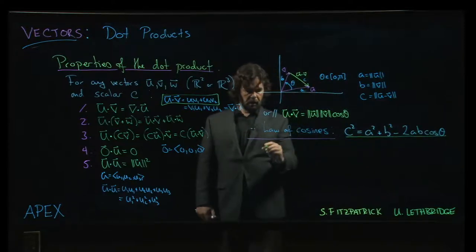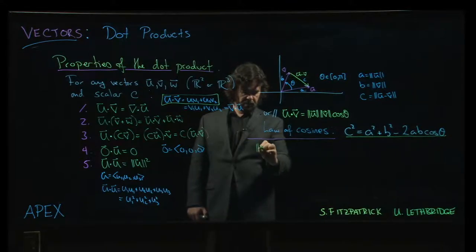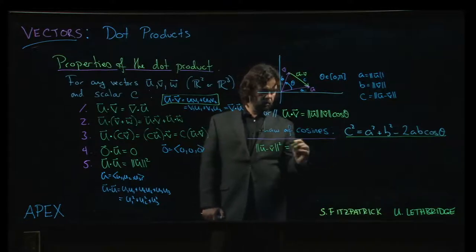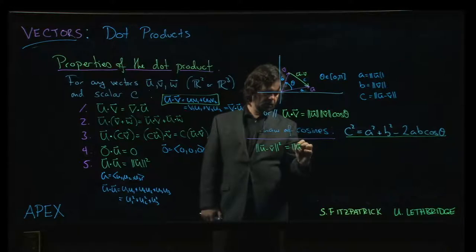So c squared, well, c is the magnitude of u minus v. So that has to be equal to a squared, but a is the magnitude of u.